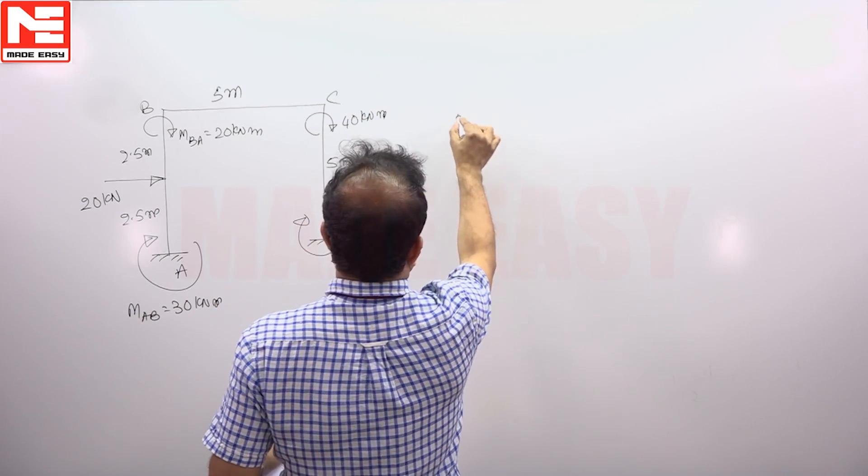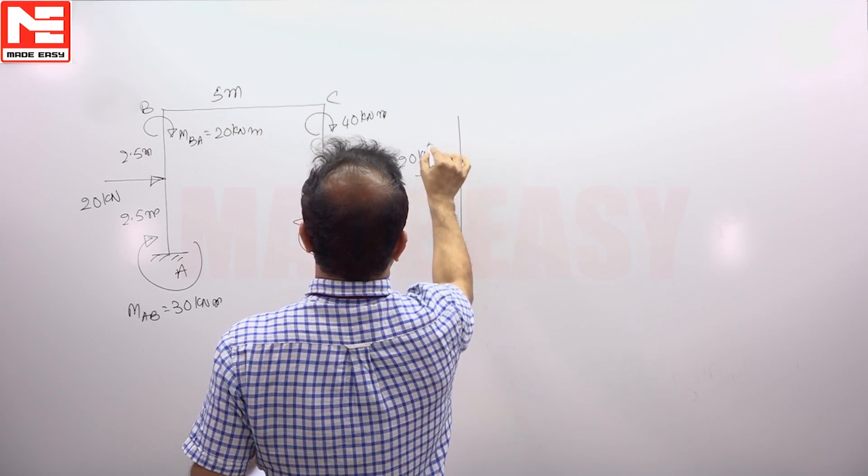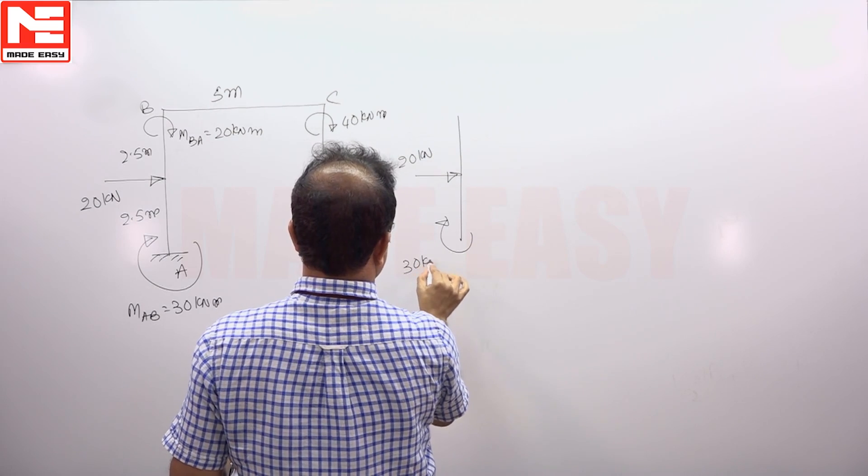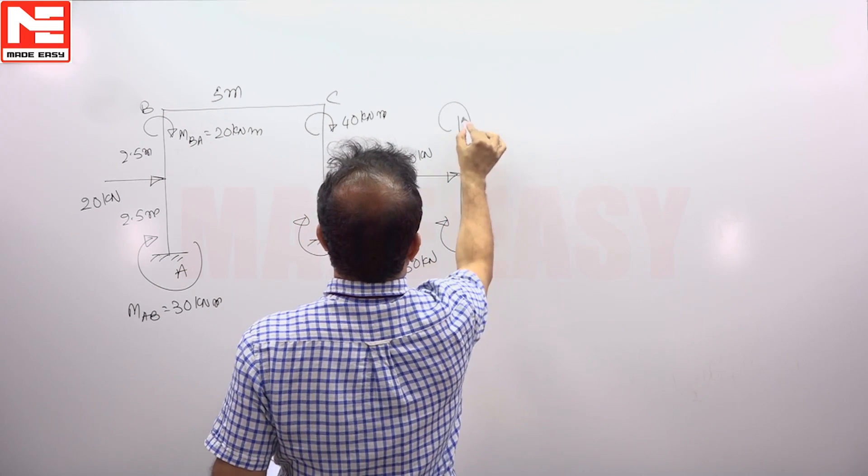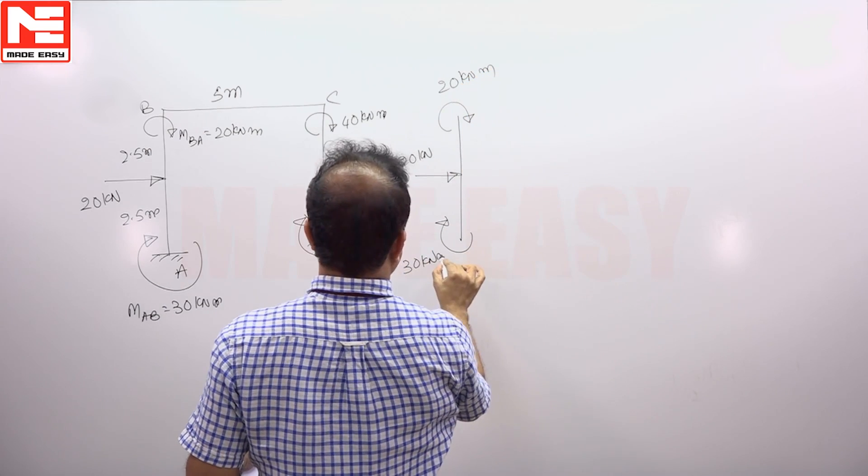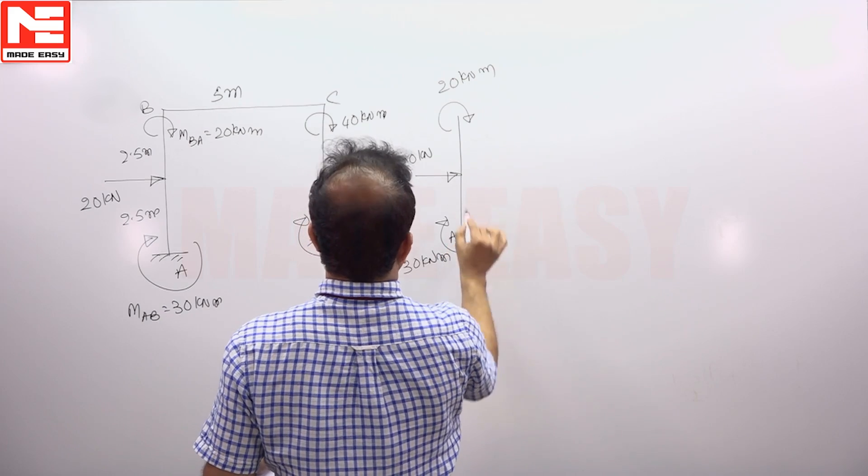If you take the free body diagram, you will get it like this. 20 kilonewton, 30 kilonewton, 20 kilonewton meter. This point we can take as A, B.